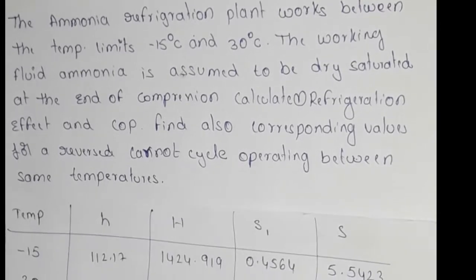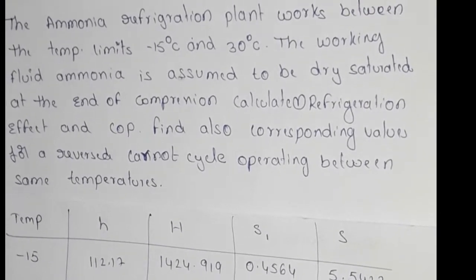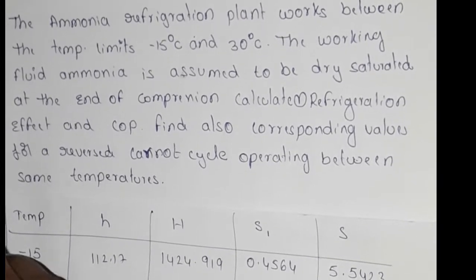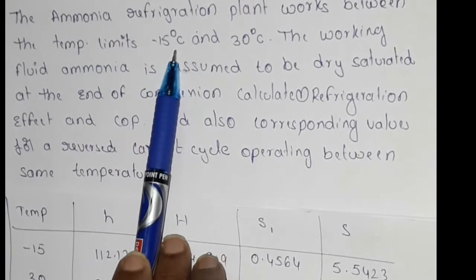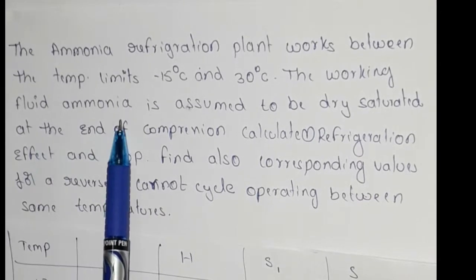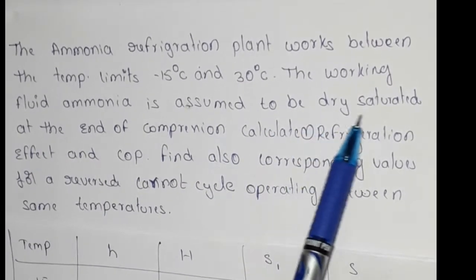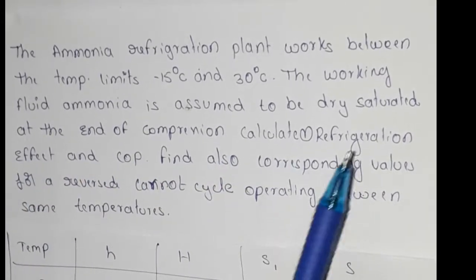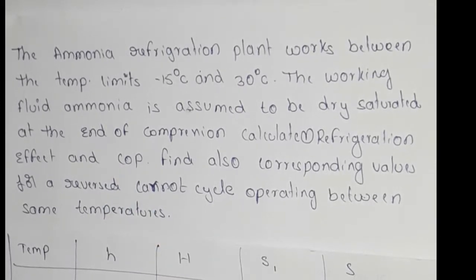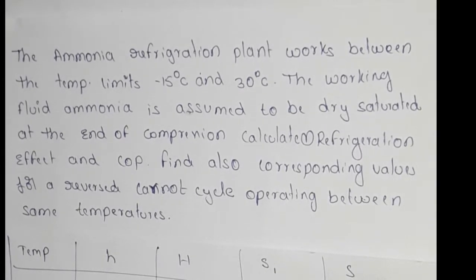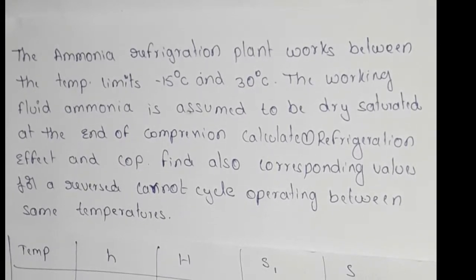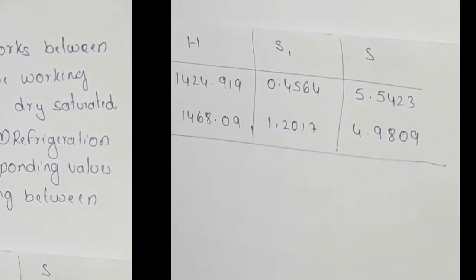Hi friends, welcome to our channel. This is a vapor compression refrigeration system problem. An ammonia refrigeration plant works between temperature limits of minus 15 degrees centigrade and 30 degrees centigrade. The working fluid ammonia is assumed to be dry saturated at the end of compression. We need to calculate the refrigeration effect and COP, and also find the corresponding values for a reversed Carnot cycle operating between the same temperatures.